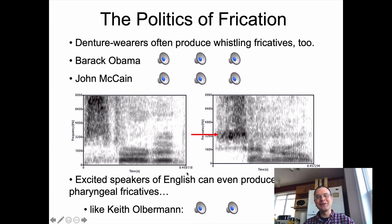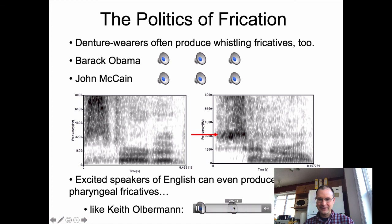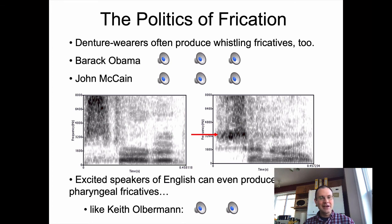I've also got some examples of Keith Olbermann producing what sounds like a pharyngeal fricative: 'And yet to me, this vote is horrible' — 'horrible.' That sound voices a pharyngeal fricative, so you can target that when you do your production exercise. I'm going to have to take a little break, but I'll just wrap up the last few slides in a minute.